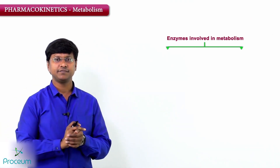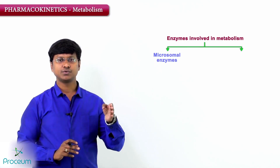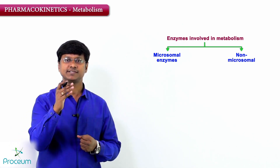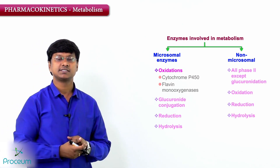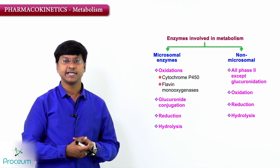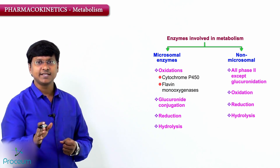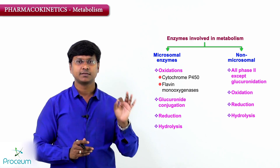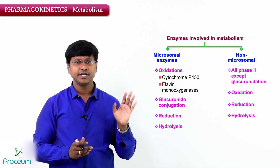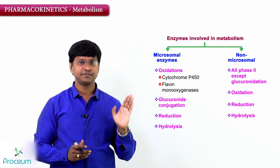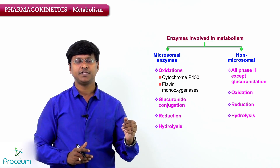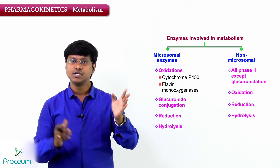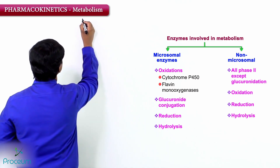Within drug metabolism, we have two types of enzymes: microsomal enzymes and non-microsomal enzymes. Under microsomal enzymes, we have a system called the cytochrome P450 system. There are many questions which can be asked about cytochrome P450, so you should be completely thorough about it. Within cytochrome P450, we have many subtypes — CYP3A4, CYP2D6, and others.